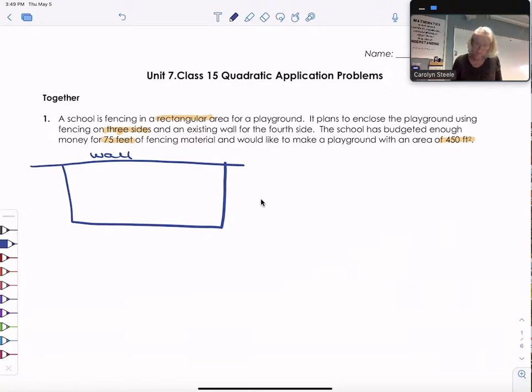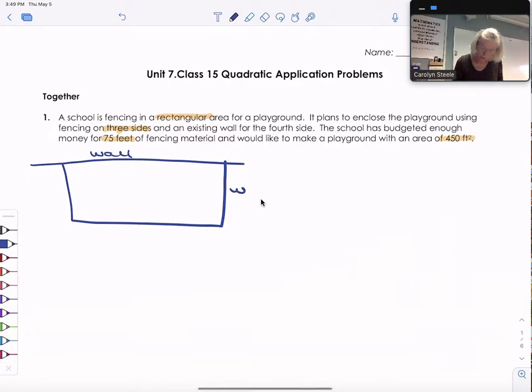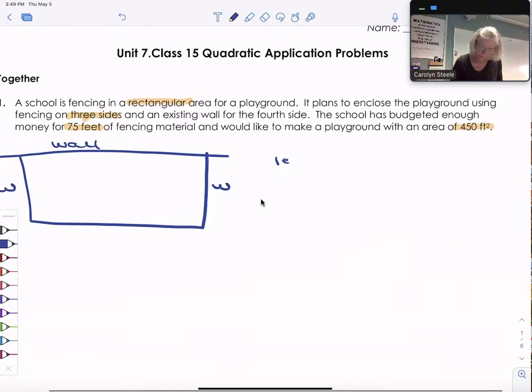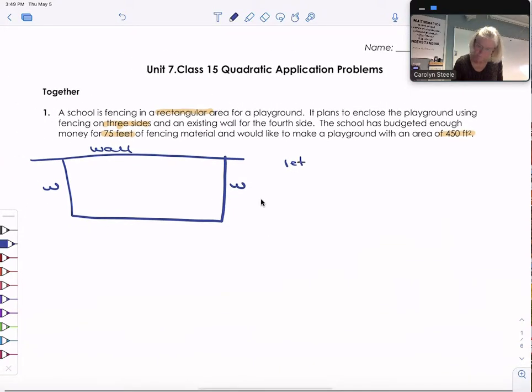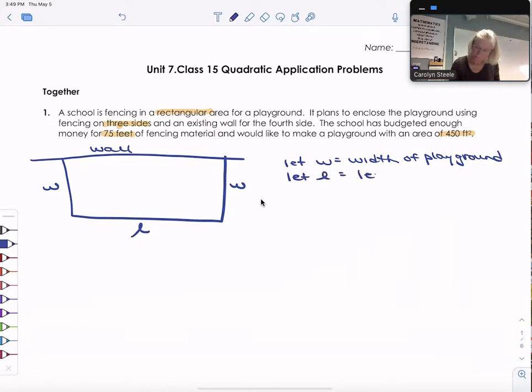And let's maybe define a few variables. I'm going to let this be the width. And then I know I also need a length. I'm going to let L be the length of the playground itself. All right so now that we have variables let's use the information we have both about area and about perimeter to start describing and writing some equations.